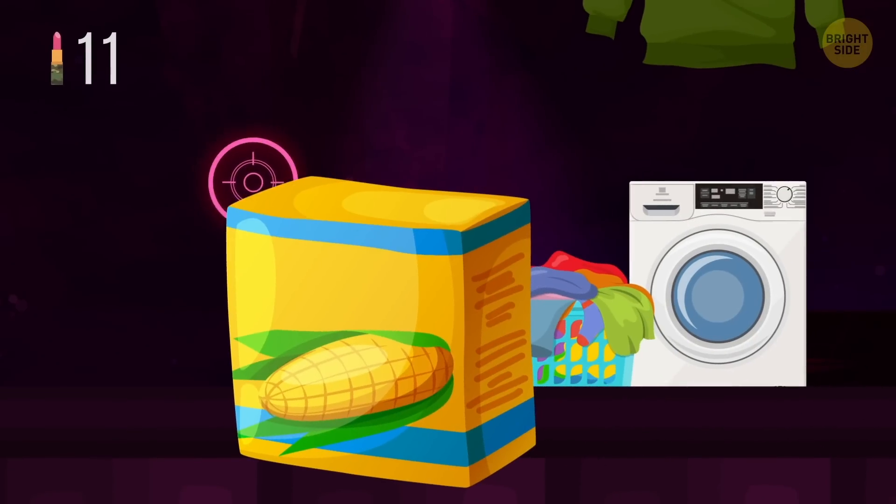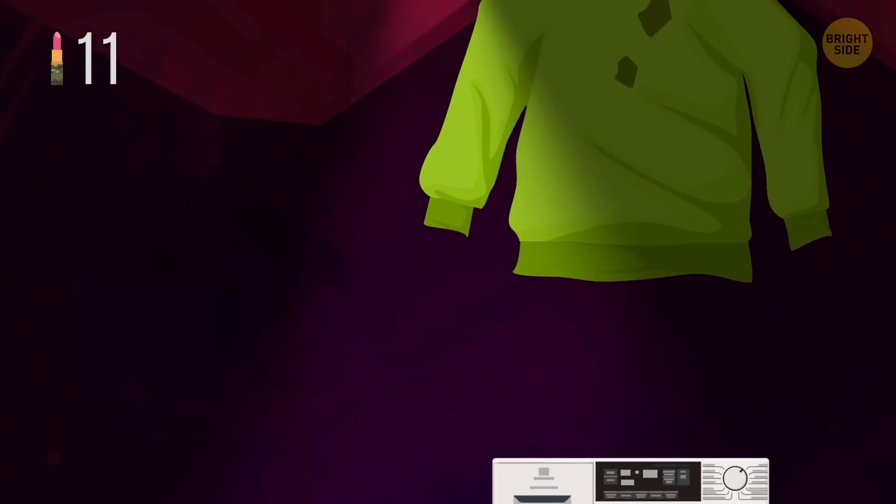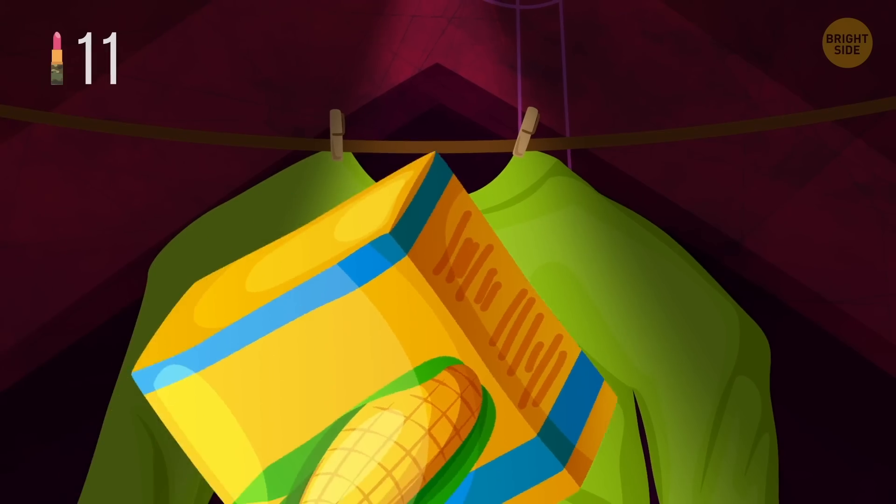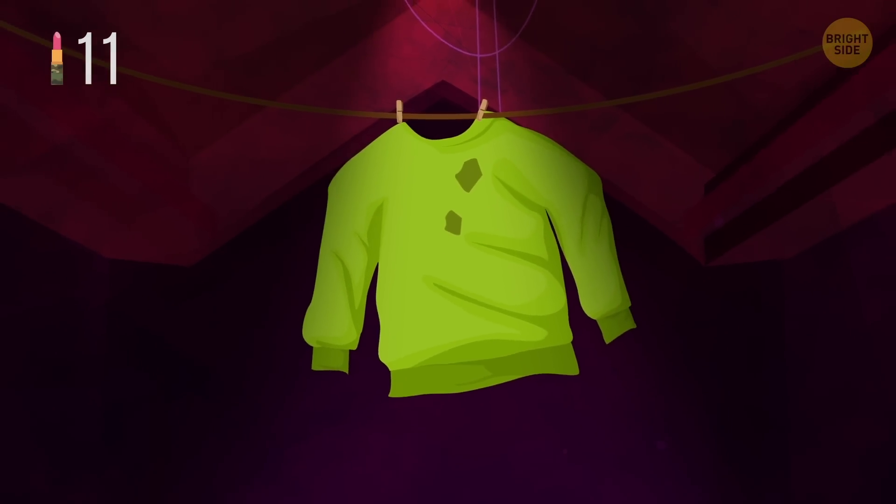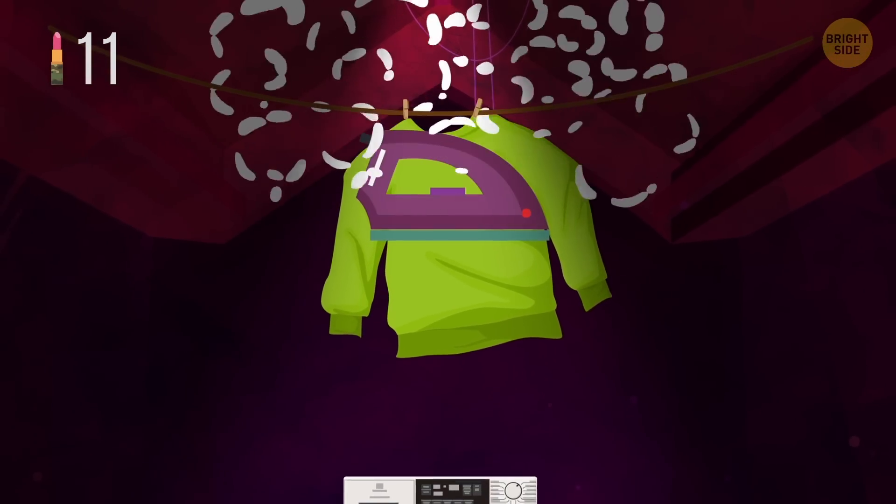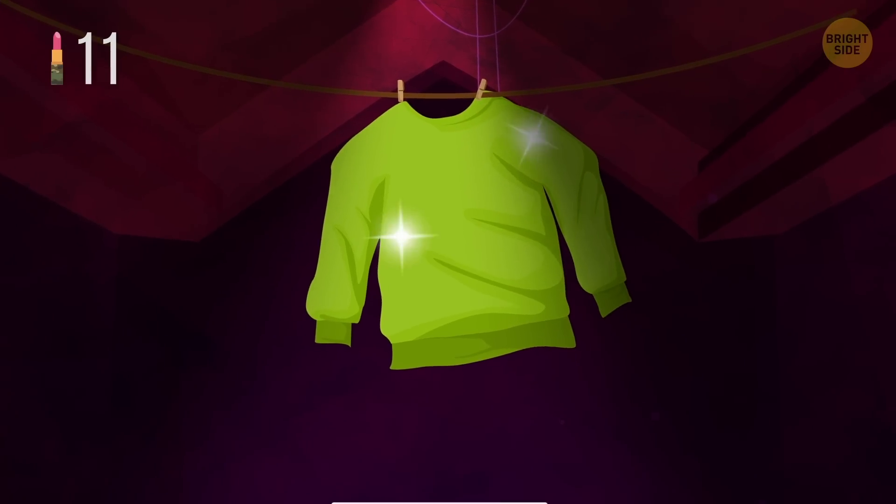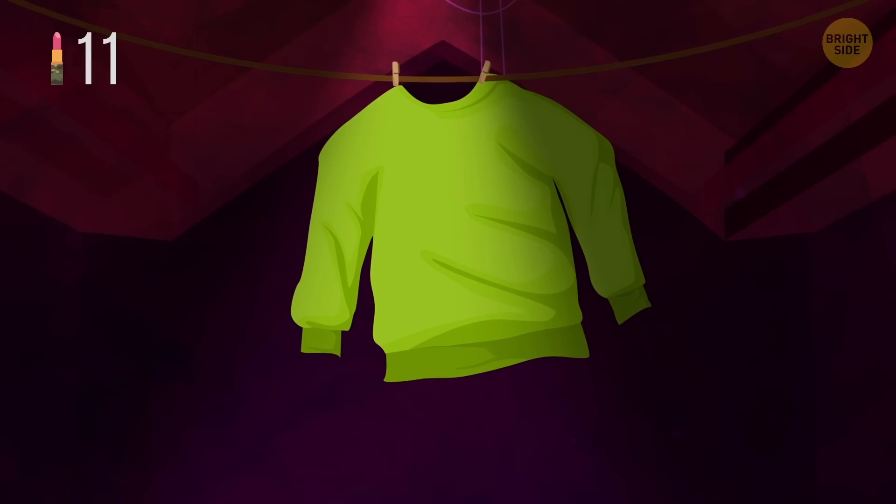Corn starch comes in handy when you need to deal with grease stains. After that, put a clean, thin cloth on the grease stain and iron with high heat. All the oil will get absorbed by the corn starch.